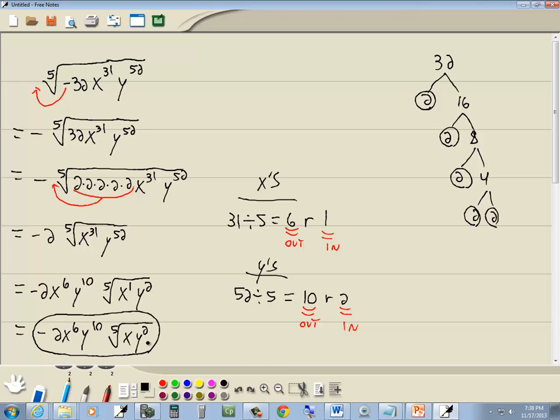Now, I don't even need to worry about entertaining whether it has any absolute value bars on it or not. Because our index is odd. Whenever your index is odd, you don't need to worry about putting absolute value bars. No matter what the instructions say. But that's our answer.